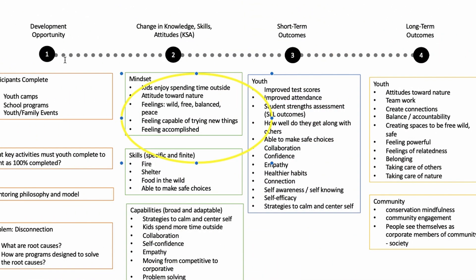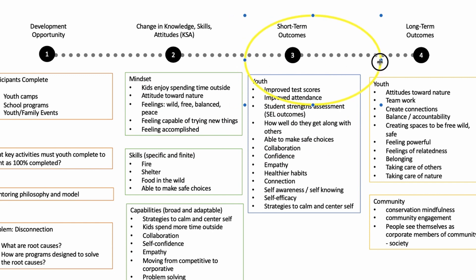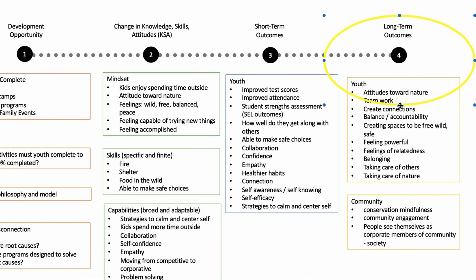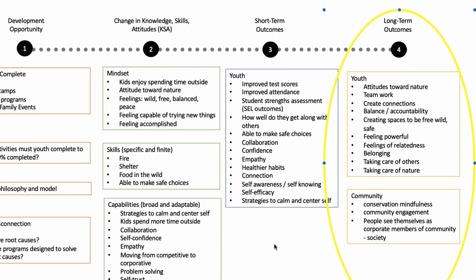Bucket three is the short-term outcomes. Sometime after a program ends, because somebody participated, there's going to be something else that happens. Think of it as: so what — you participated in a leadership training? What's it supposed to do for the organization? What's it supposed to do between the leader and their team? There are short-term outcomes and we can make bullet points of those. And then lastly, bucket four is longer-term outcomes. If your short-term outcomes show up and we can influence those, then we can also likely in time see these longer-term outcomes show up as well.